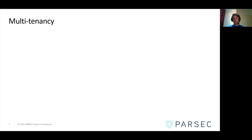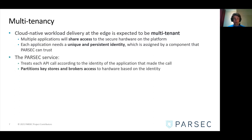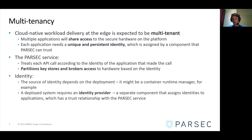Multi-tenancy is obviously an important part of this. Cloud-native workload delivery at the edge is expected to be multi-tenant, so multiple applications will share access to the secure hardware on the platform. Each application needs a unique and persistent identity, assigned by a component that Parsec can trust. The Parsec service treats each API call according to the identity of the calling application, partitions key stores, and brokers access to hardware based on identity. A deployed system requires an identity provider — a separate component that assigns identities to applications and has a trust relationship with the Parsec service.